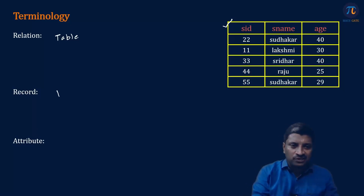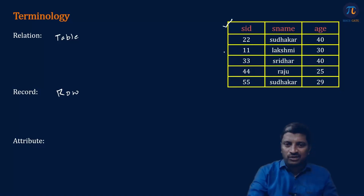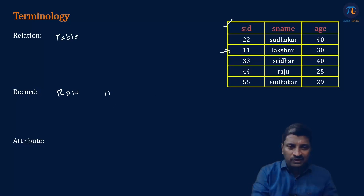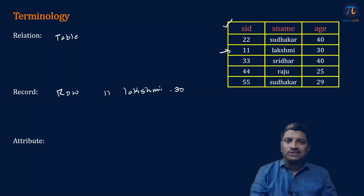The next one is record. What is a record? A row of a table is called a record. For example, 11, Lakshmi, 30 is an example of a record in this relation.